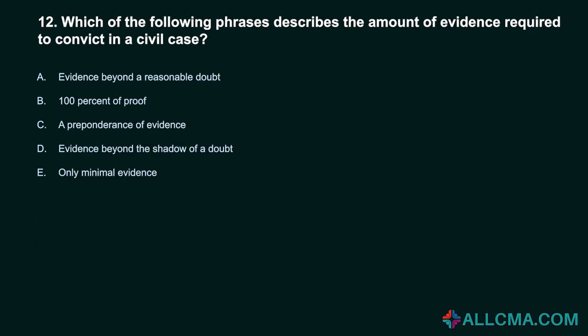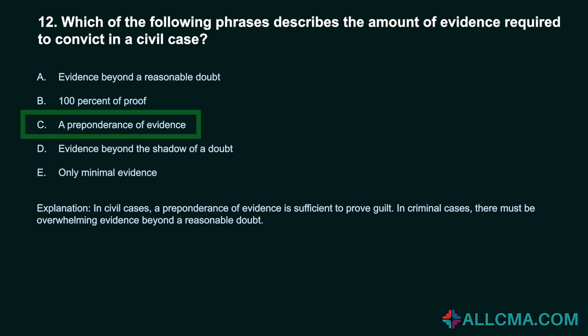Question 12: Which of the following phrases describes the amount of evidence required to convict in a civil case? A. Evidence beyond a reasonable doubt. B. 100% of proof. C. A preponderance of evidence. D. Evidence beyond the shadow of a doubt. E. Only minimal evidence. Correct answer: C. A preponderance of evidence. In civil cases, a preponderance of evidence is sufficient to prove guilt. In criminal cases, there must be overwhelming evidence beyond a reasonable doubt.